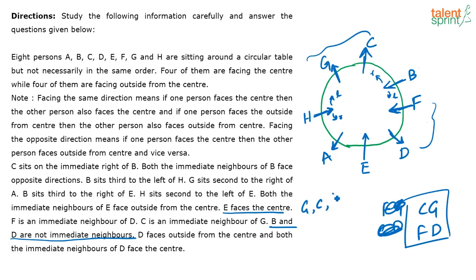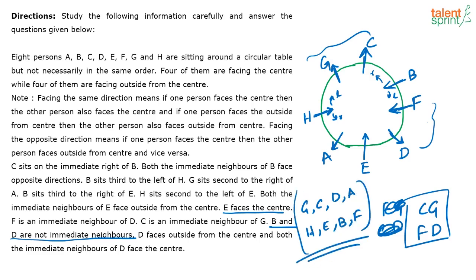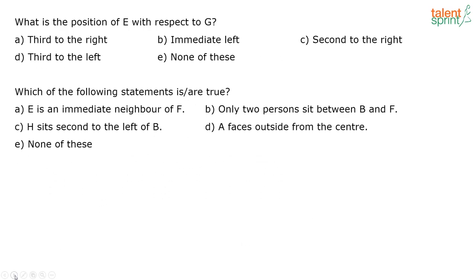So G, C, D and A are facing outside. H, E, B and F are facing inside. That is the final arrangement. Whenever you determine inward or outward direction, assume you are the person sitting there facing inwards — your left will be the left of that person and your right will be the right of that person.